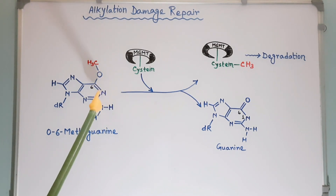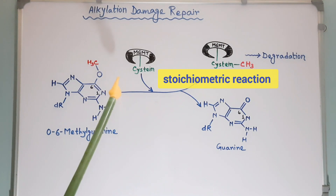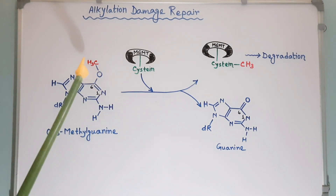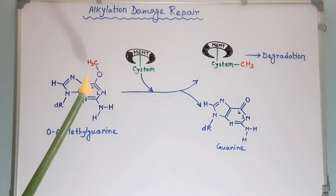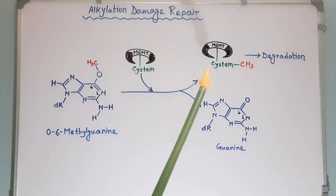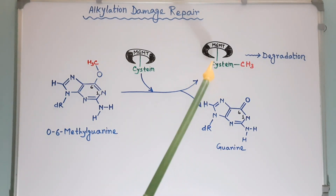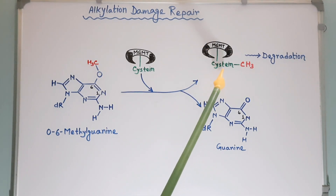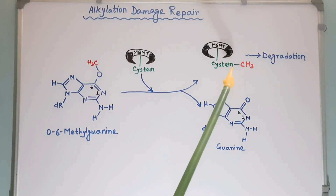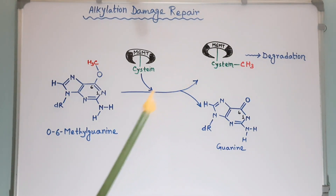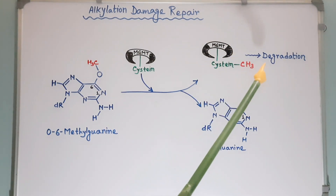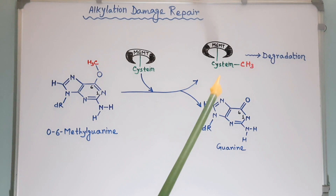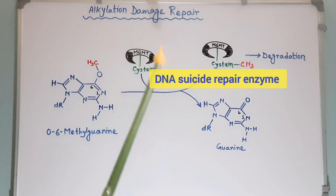Methylguanine methyltransferase mediates a stoichiometric reaction. In this reaction, methyl and other alkyl groups bound to the O6 position of guanine in DNA are released and get attached to a cysteine residue in the active site of MGMT via a thioester linkage. In this way, O6-methylguanine returns to its original form, guanine. Alkylation of MGMT leads to rapid degradation of the protein; thus, this enzyme is known as a DNA suicide repair enzyme.